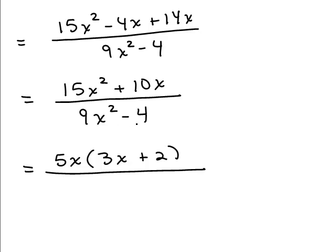And the denominator, we want to factor that. There is no common factor so we can't do anything by taking out a greatest common factor. But it is the difference of two squares. So that's 3x plus 2 times 3x minus 2.